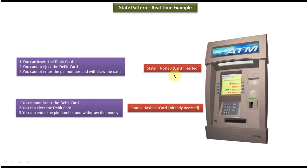So if the state is 'No Debit Card', it allows you to perform certain operations. If the state is 'Has Debit Card', it allows you to perform some other operations. Based on the internal state of the ATM machine, the behavior will be different — and this is the best example of the state design pattern.